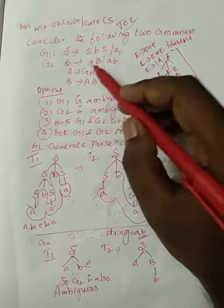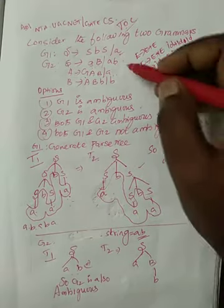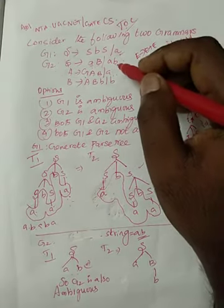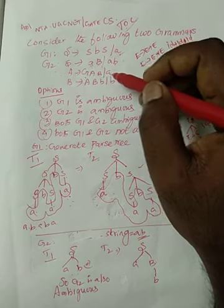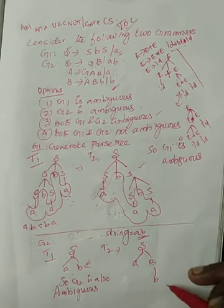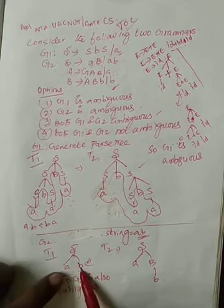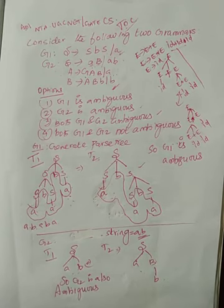Another tree is S tends to small A, capital B are generating. And again, using another production rule, I am substituting that B by small b. Now, what happened? Look at those two tree looks. Both are different. So, it is an ambiguous grammar.